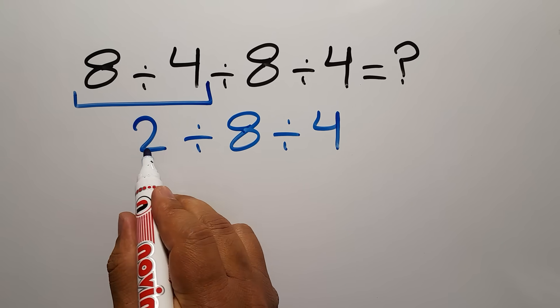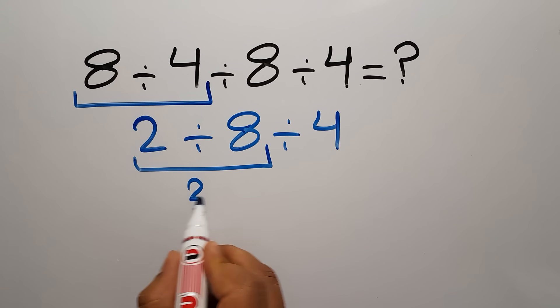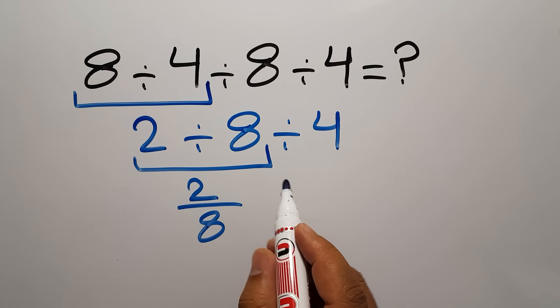We have to do this division: 2 divided by 8. We can write 2 over 8, and here we have divided by 4. So 2 over 8 divided by 4.